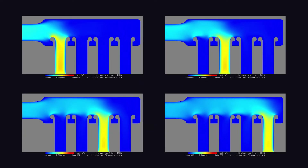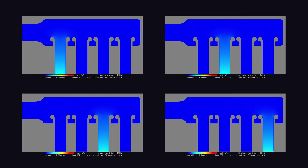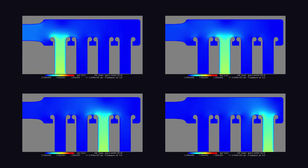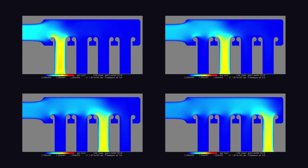Just by looking at the new model, it is clear that the runners look much more similar to each other than they did in the previous test. You can see a bit of boundary layer separation on the number one runner, but in general they look pretty even.